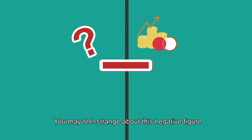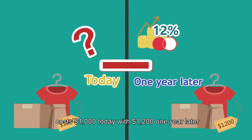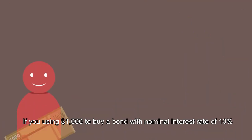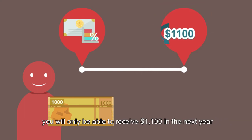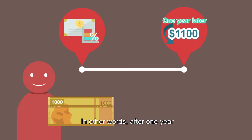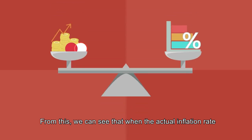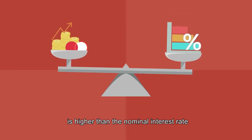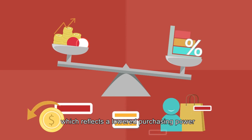You may feel strange about this negative figure. In fact, a 12% actual inflation rate means that you can only buy something that costs $1,000 today with $1,200 one year later. If you use $1,000 to buy a bond with a nominal interest rate of 10%, you will only receive $1,100 the next year. In other words, after one year, your purchasing power will not be enough to buy things which could be bought with $1,000 today. We can see that when the actual inflation rate is higher than the nominal interest rate, your return in real terms will be negative, reflecting a lowered purchasing power.